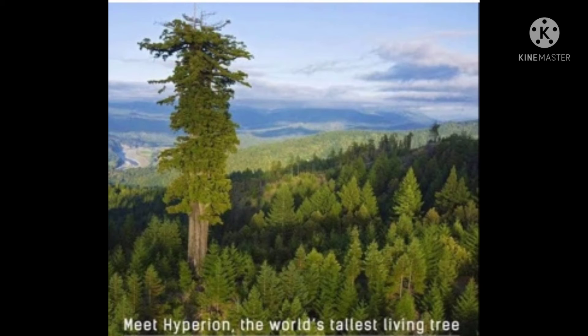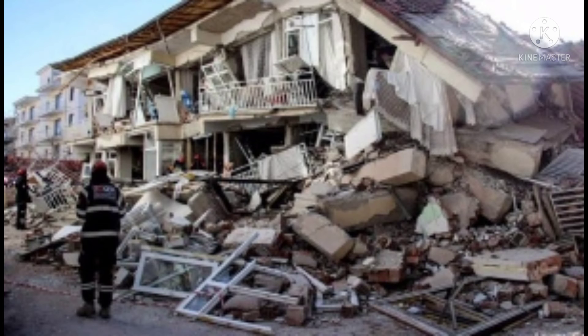Small earthquakes are happening somewhere on the Earth all the time. The Earth's atmosphere protects the planet from meteors. They usually burn up before they reach the Earth's surface.